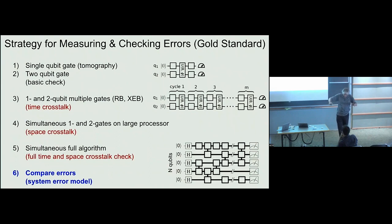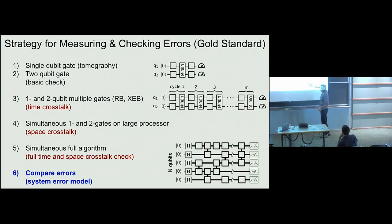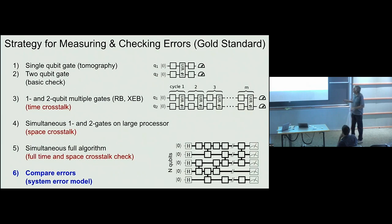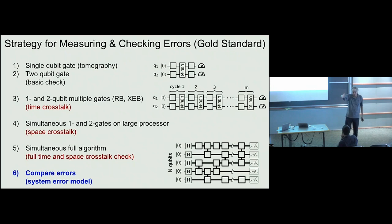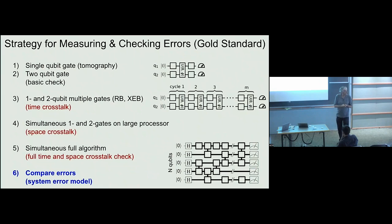You can check single-qubit gates with tomography, and two-qubit gates the same way. Randomized benchmarking and cross-entropy benchmarking let you run gates in time and see if one time step affects another. You can also build a large processor and check individual gates, or run all pairs around a big array to look for spatial crosstalk. You can then run a full complex algorithm and test everything. As an experimentalist, there's no guarantee the system will work — you have to test it, take data, and check if your models are consistent.